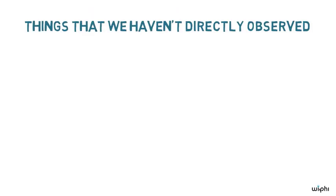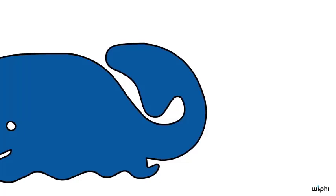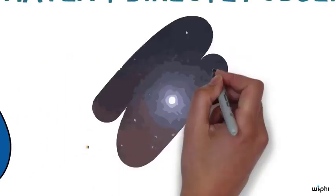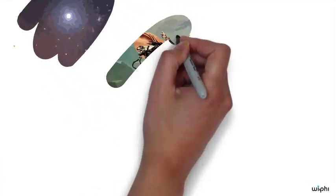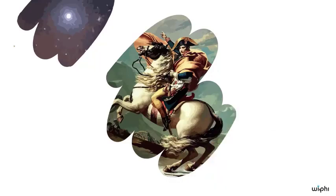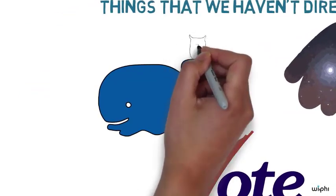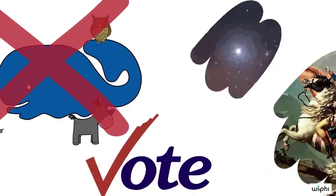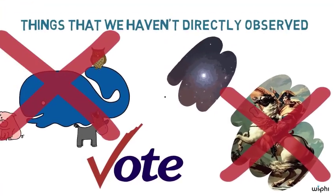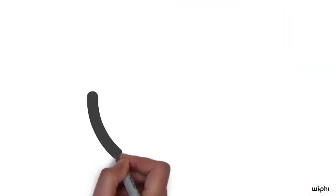We ordinarily take ourselves to know lots about things that we haven't directly observed. For instance, I take it that I know that blue whales are the largest animals on Earth. I bet you know that too. I take it I know that the Alpha Centauri system is the nearest star system to our own. I take it I know that there was a man named Napoleon who conquered much of Europe. I also take it I know when the next American presidential election will be. None of these are things that I've directly observed. I haven't seen any blue whales. Certainly haven't seen all other animals on Earth to compare them to. I never met Napoleon, and I haven't observed anything in 2016 yet. And yet I, and I take it you, ordinarily take myself to know all sorts of things about these matters.